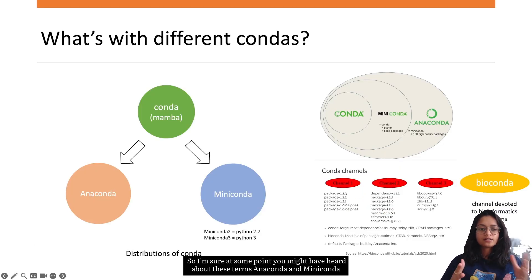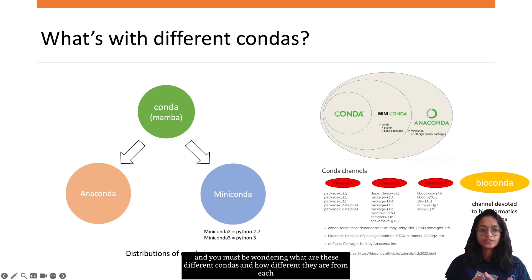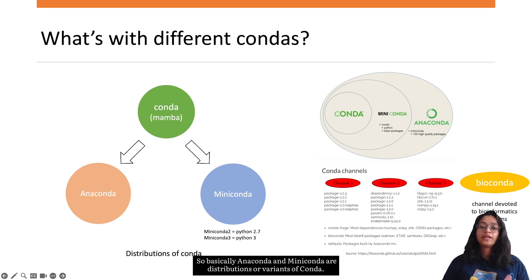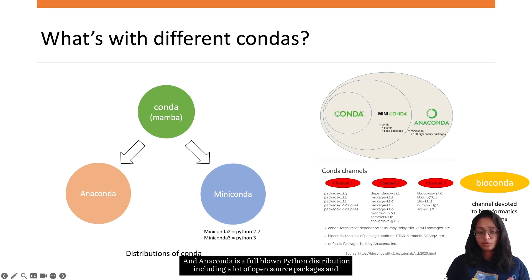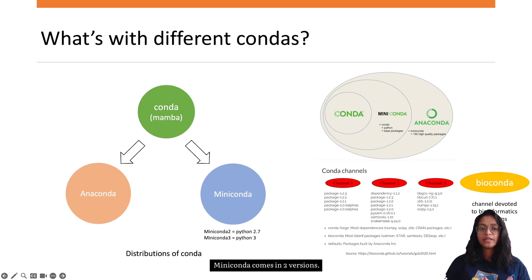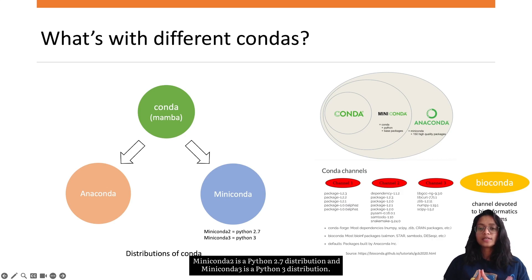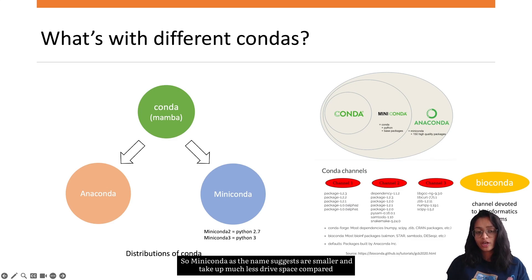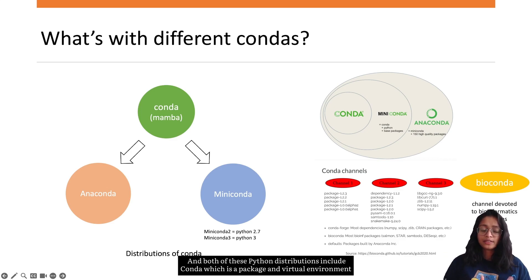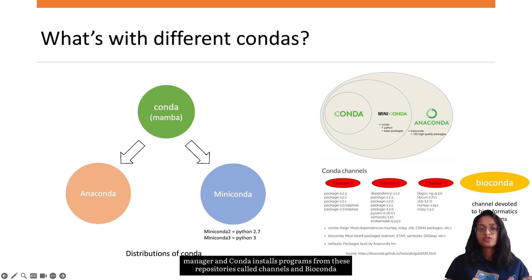You might have heard about the terms anaconda and miniconda and wondered how they differ from each other. Anaconda and miniconda are distributions or variants of conda. Anaconda is a full-blown Python distribution including many open-source packages. Miniconda comes in two versions: miniconda 2 is a Python 2.7 distribution and miniconda 3 is a Python 3 distribution. Miniconda, as the name suggests, is smaller and takes up much less drive space because it does not include all the packages found in anaconda. Both include conda as a package and virtual environment manager.